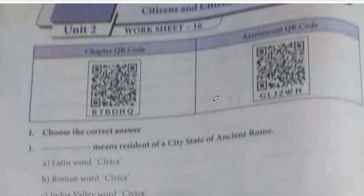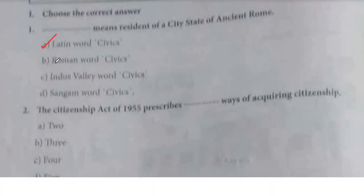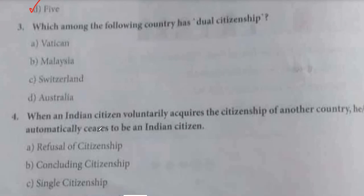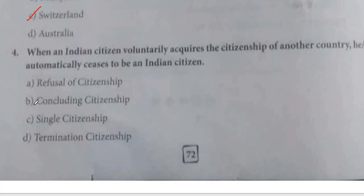Worksheet 16. Question 1: 'Dash' means resident of a city — city-state of ancient Rome. The answer is the Latin word 'civics' — Option A. Question 2: The Citizenship Act of 1955 prescribes 5 ways of acquiring citizenship — Option D. Question 3: Which country has dual citizenship? The answer is Switzerland. Question 4: When an Indian citizen voluntarily acquires the citizenship of another country, he or she automatically ceases to be an Indian citizen — this means Termination of Citizenship — Option D.